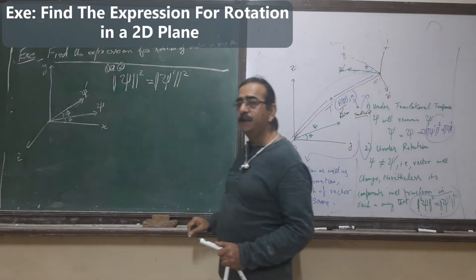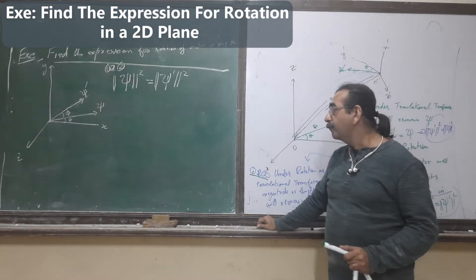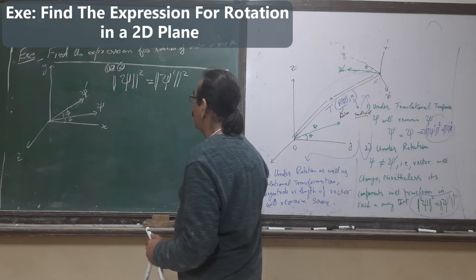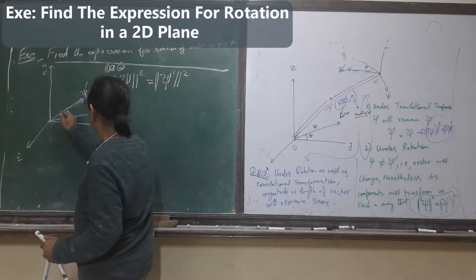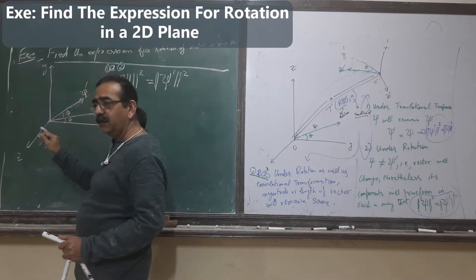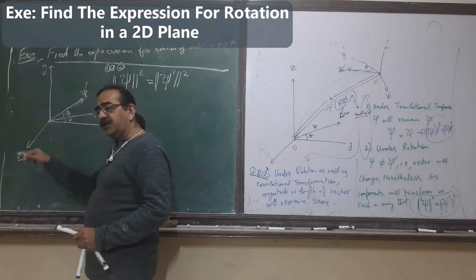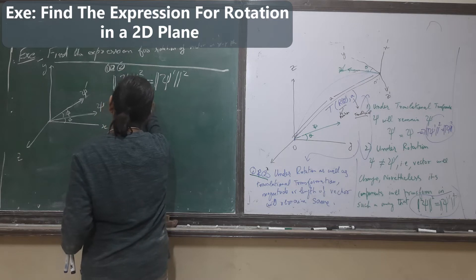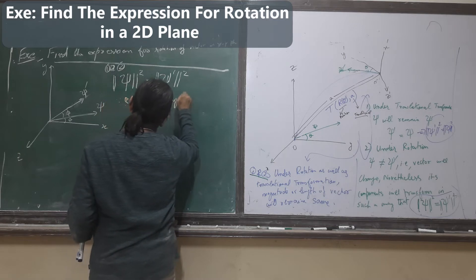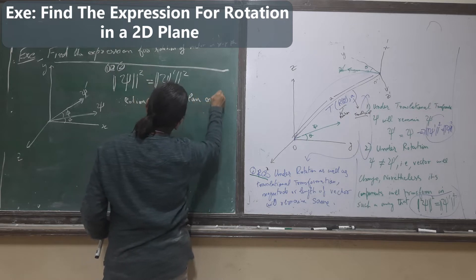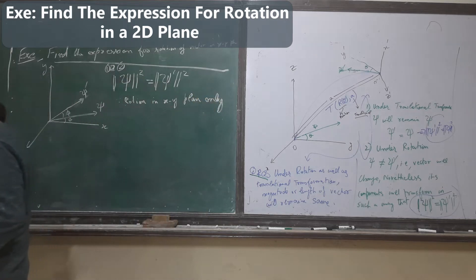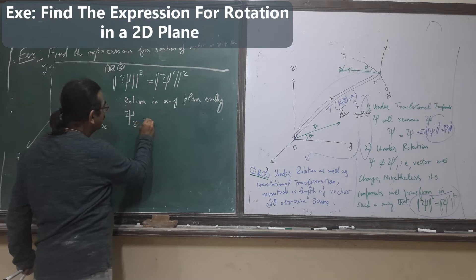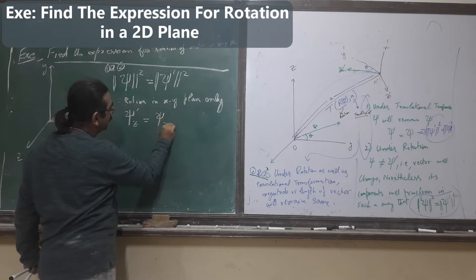Phi bar magnitude must be the same. Since the z-component has two components — I has two components — and since we are considering rotation in the xy plane only, phi_z bar must be equal to phi_z.